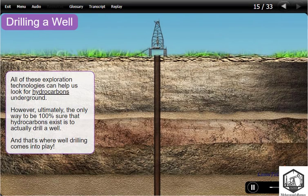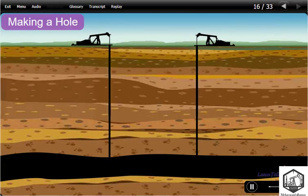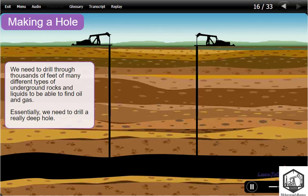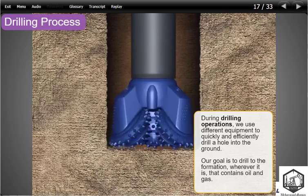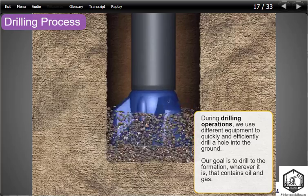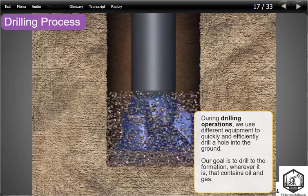All of these exploration technologies can help us look for hydrocarbons underground. However, ultimately, the only way to be 100% sure that hydrocarbons exist is to actually drill a well, and that's where well drilling comes into play. We need to drill through thousands of feet of many different types of underground rocks and liquids to be able to find oil and gas. During drilling operations, we use different equipment to quickly and efficiently drill a hole into the ground. Our goal is to drill to the formation, wherever it is, that contains oil and gas.